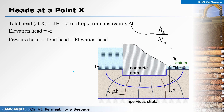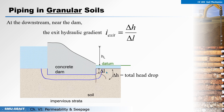To determine the total head at a certain point x, it is calculated as: total head at x = hl minus (number of drops from upstream to point x) times delta h, where delta h = hl / Nd. For example, for point x, if there are five drops counting from upstream, then total head at x = hl minus 5 times (hl / Nd). The exit hydraulic gradient near the dam at the downstream side is delta h divided by delta l.